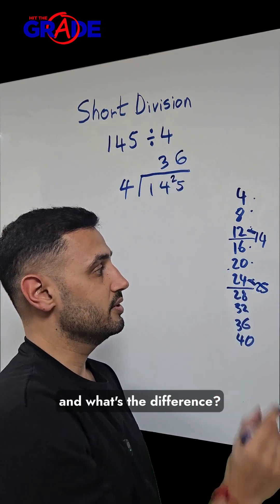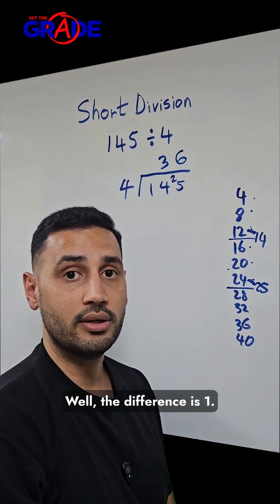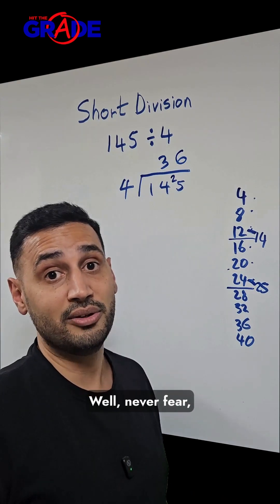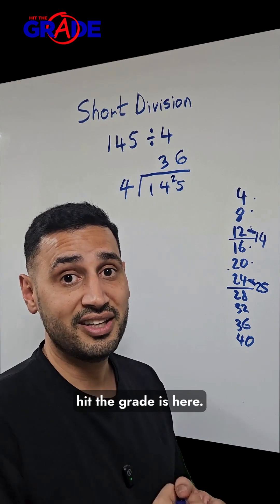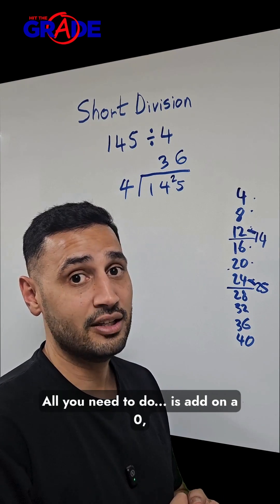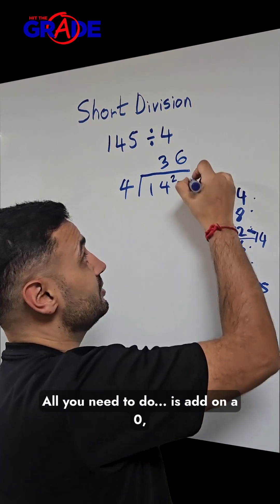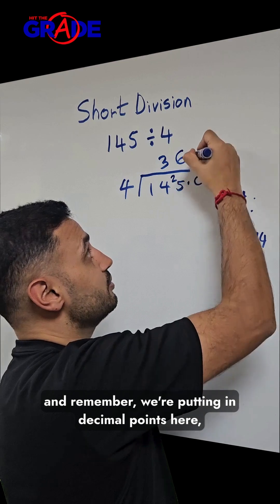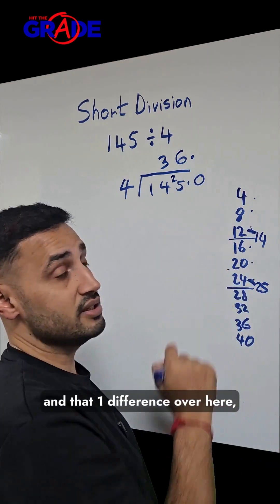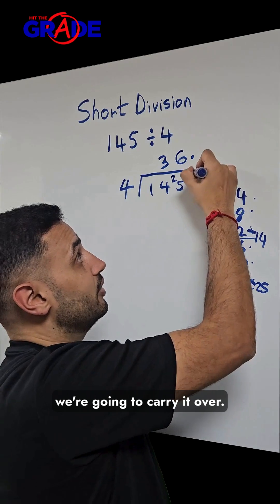And what's the difference? Well, the difference is 1. Where does that 1 go? Well, never fear, Hitgrade is here. All you need to do is add on a 0. And remember, we're putting decimal points here. So add on a 0, and that 1 difference over here, we're going to carry it over.